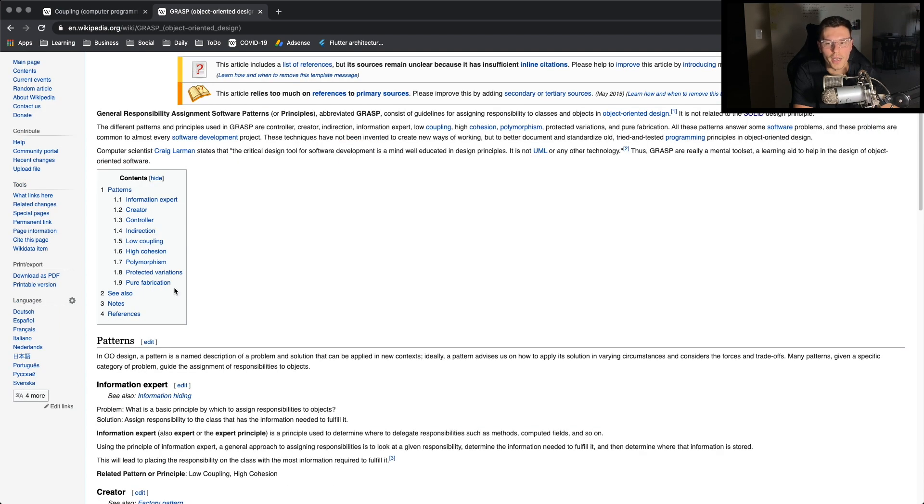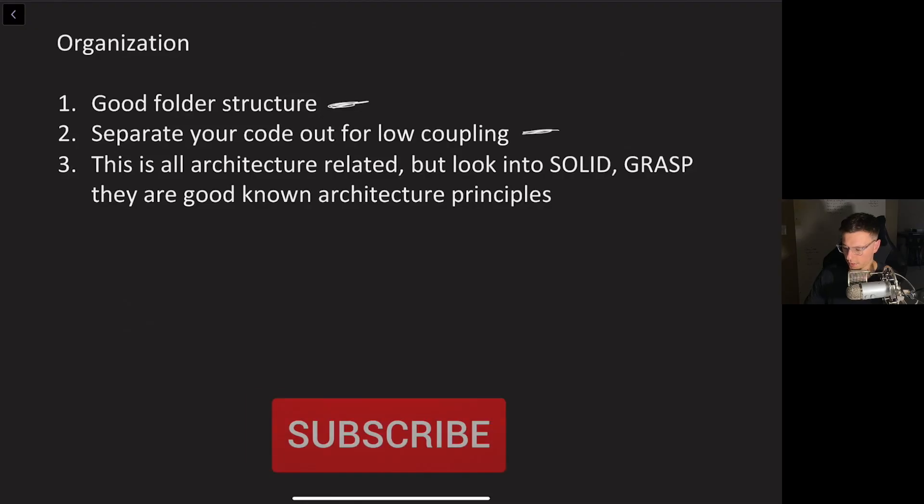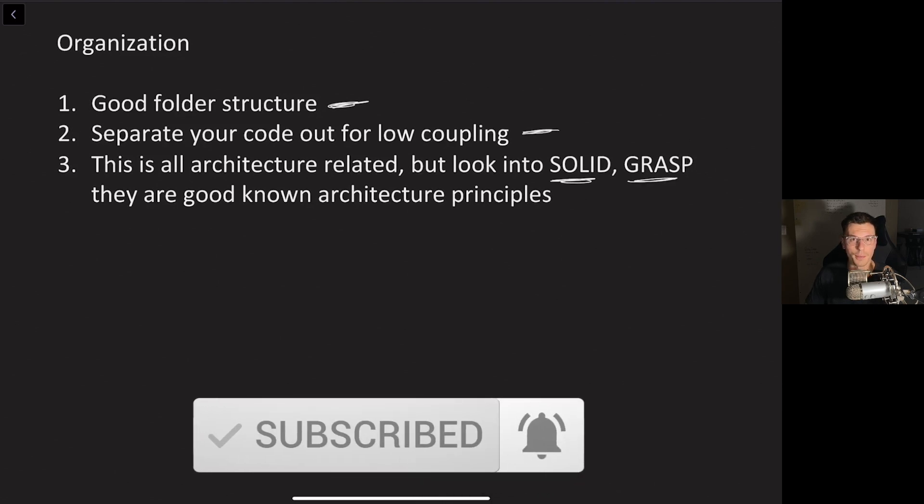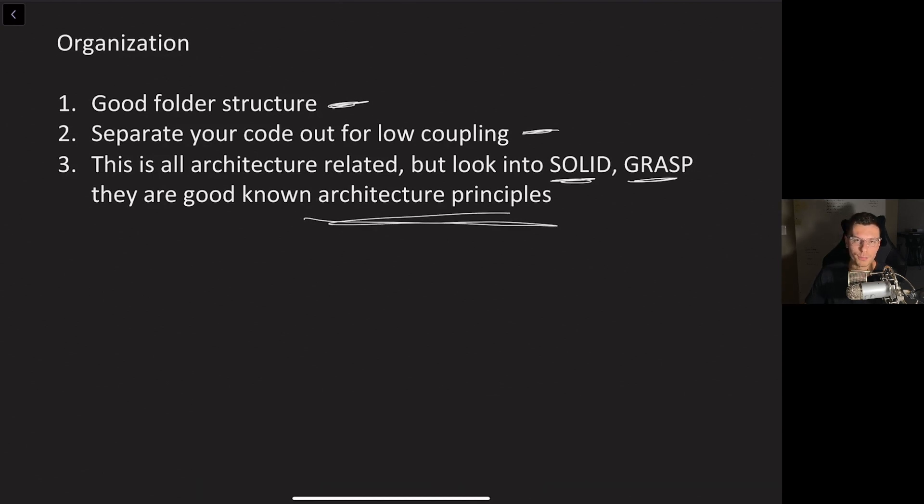Now GRASP contains nine patterns and you'll see low coupling is one of them. I recommend you do your own research on GRASP and SOLID and architecture patterns that you can use. So like I said they are SOLID and GRASP and they're known as the top two main architecture principle lists. Anyway architecture and architecture principles is a huge topic and I'm probably not the best expert on it anyways.